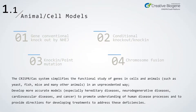The CRISPR-Cas9 system simplifies the functional study of genes in cells and animals — such as yeast, fish, mice, and many other animals — in an unprecedented way, and develops more accurate models to promote understanding of human disease processes and to provide directions for developing treatments to address these deficiencies.